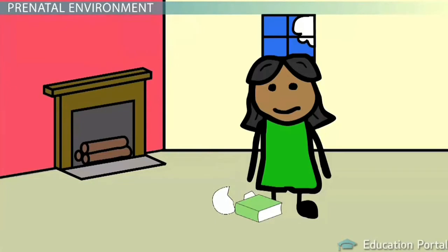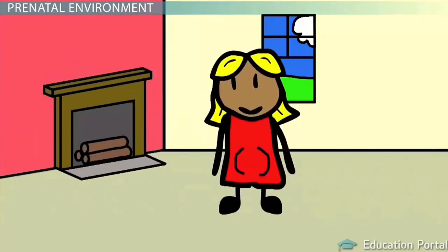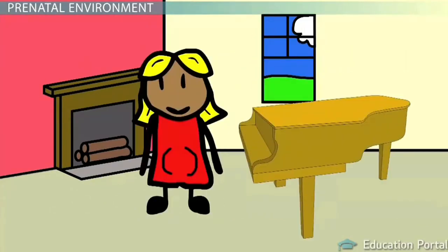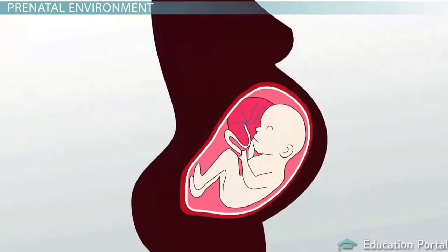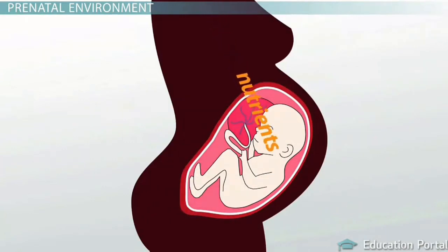Part of the reason the child develops inside the mother is to protect it from being harmed by the external environment. This means that the developing child is protected from all unwanted environmental hazards, right? The environment inside the uterus where the unborn child is developing is called the prenatal environment.